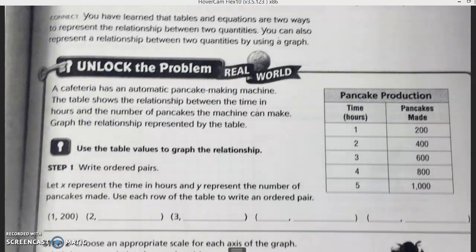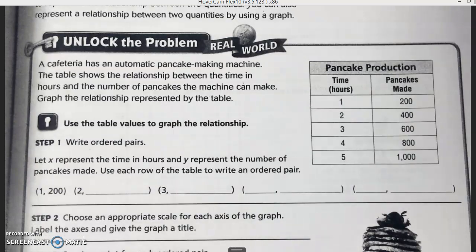In the first example, a cafeteria has an automatic pancake-making machine. The table shows the relationship between the time in hours and the number of pancakes the machine can make. We've got to graph the relationship that's represented by the table.